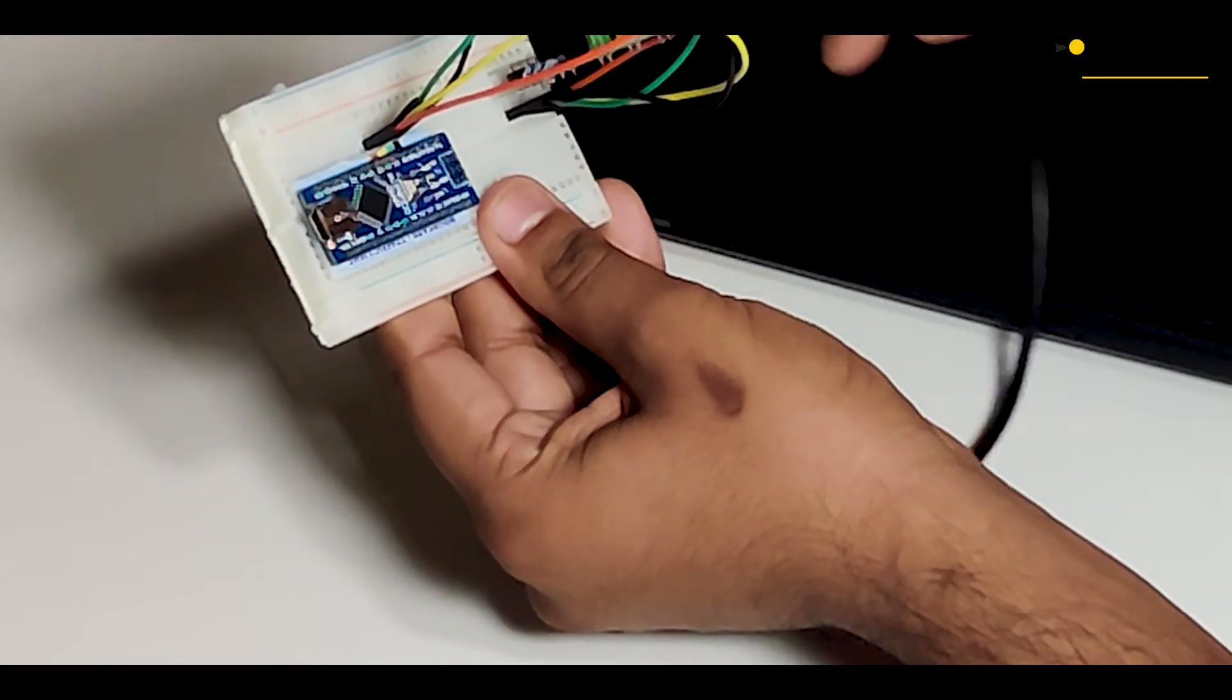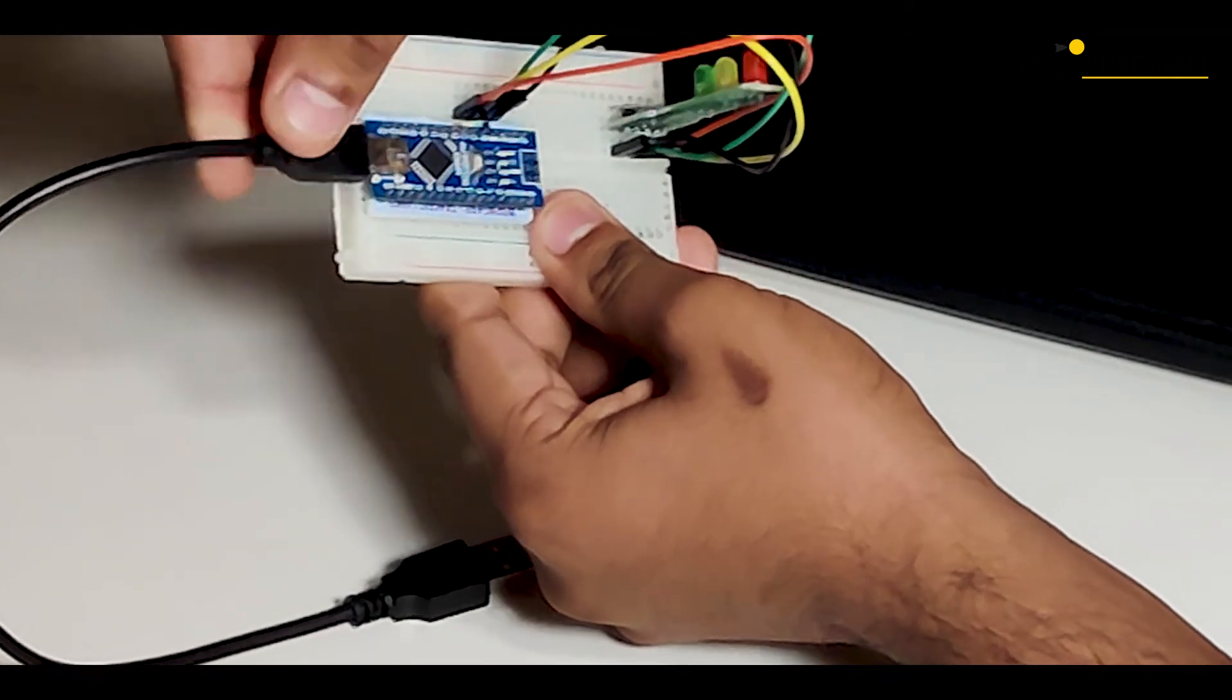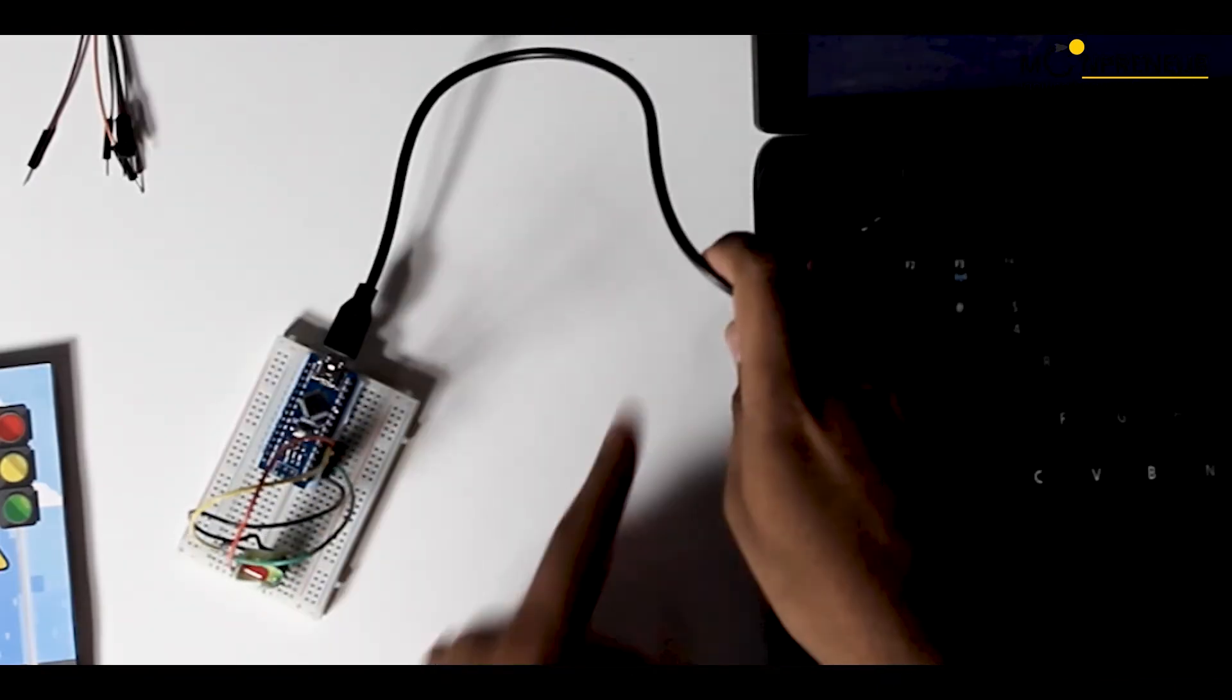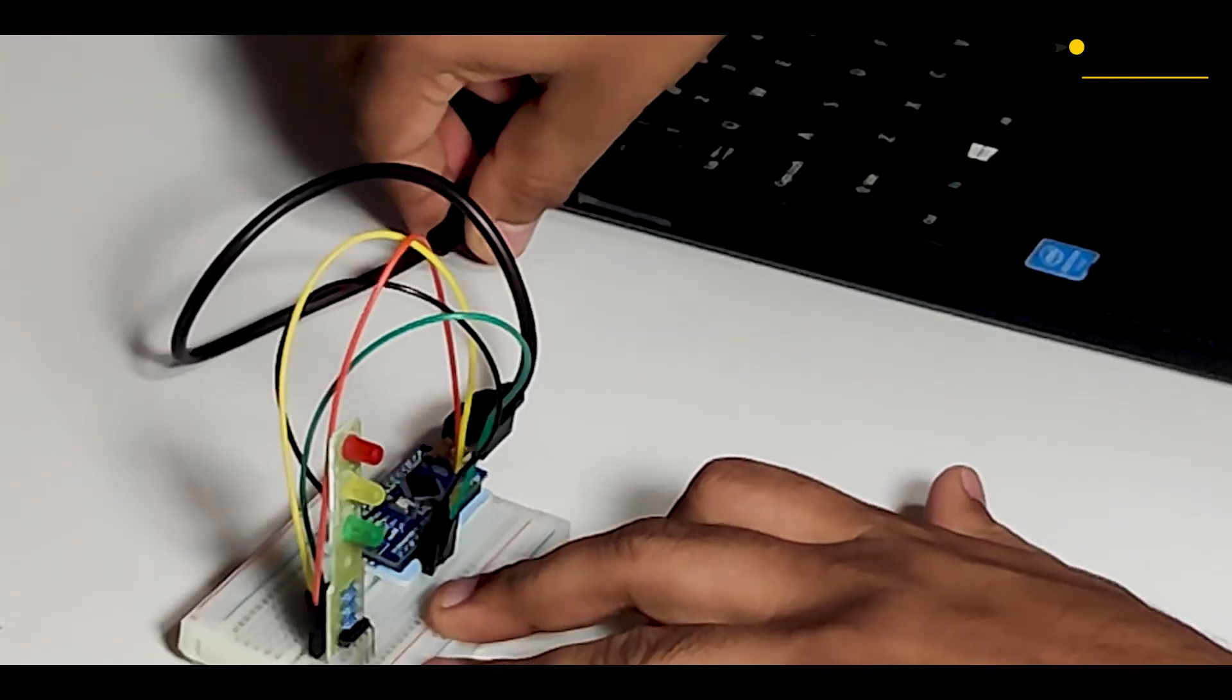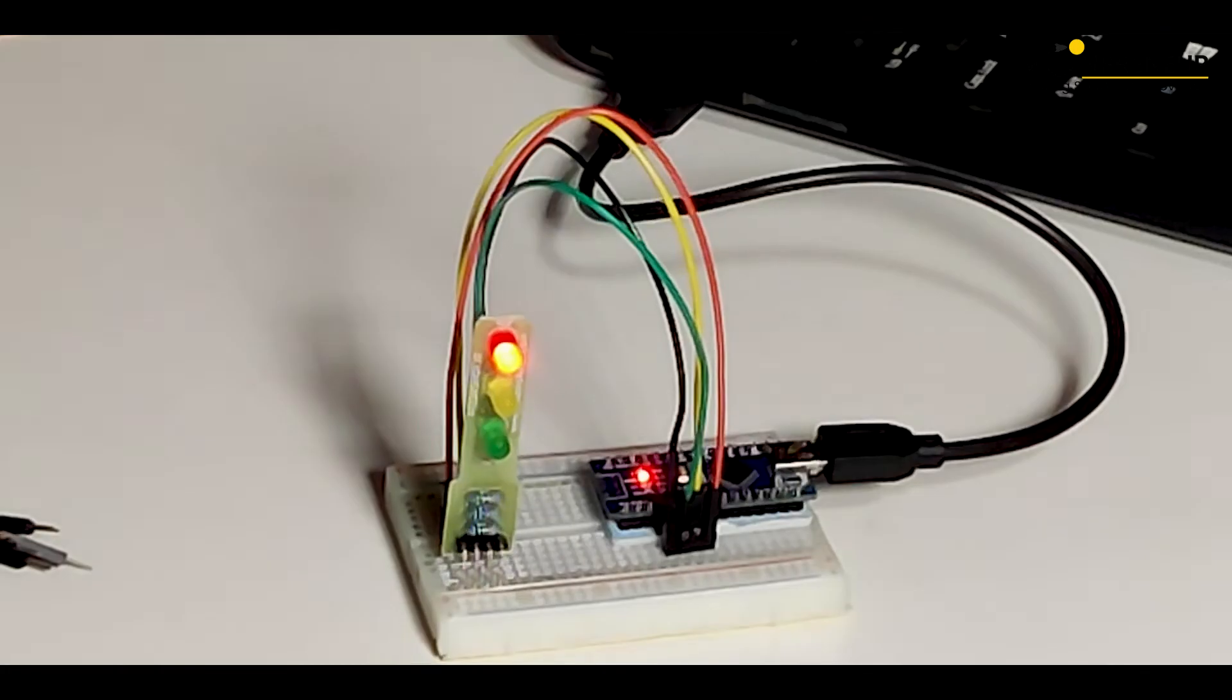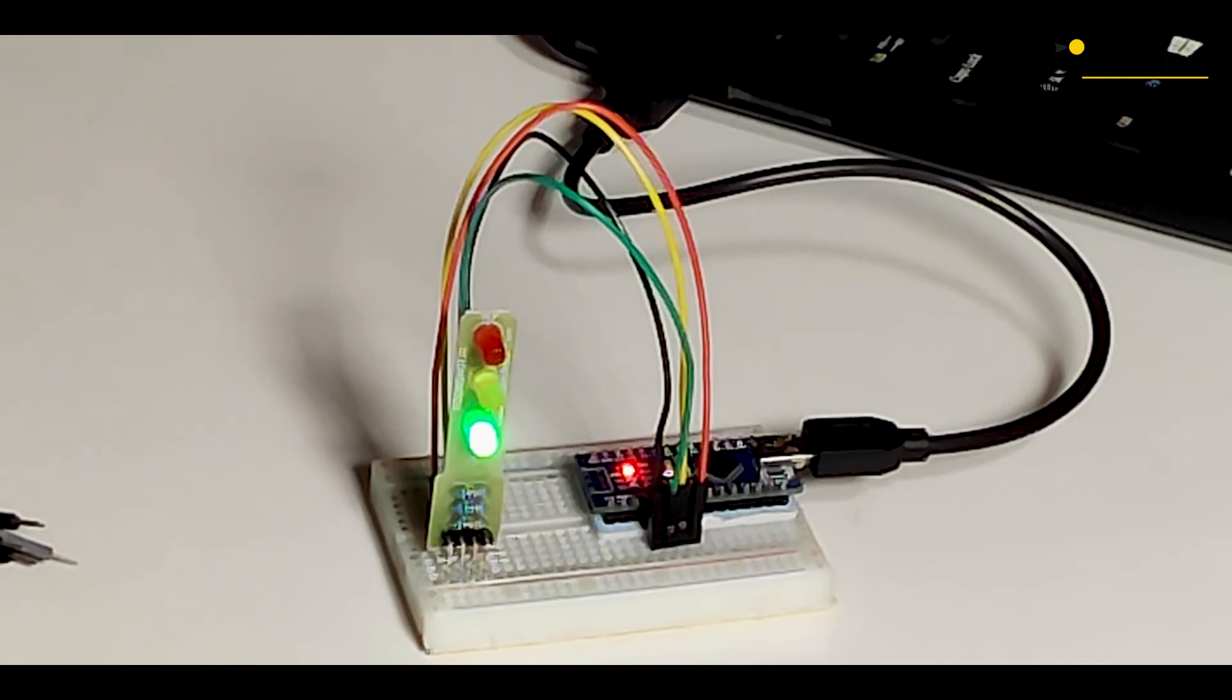Finally, we'll insert the USB cable into a USB power adapter. You can also use the USB port of a laptop or a computer. The USB cable helps us power up the board. And there you go. Your traffic light is working just like that.